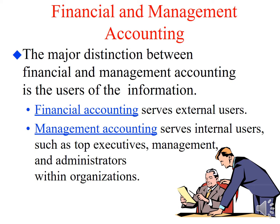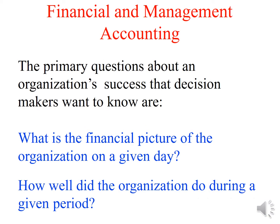The major distinction between financial and management accounting is the user of the information — external versus internal. Financial accounting is for the legality and legibility of the business for external stakeholders: audit firms, vendors, banks. If you want to get loans or list your company on the stock market, you have red herring prospectuses and must disclose everything. Management accounting, on the other hand, is for internal users — for management to understand resources at their disposal and how to optimize utilization for the benefit of the organization.